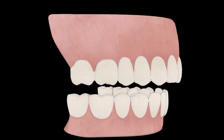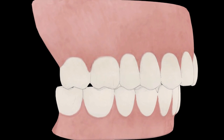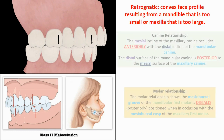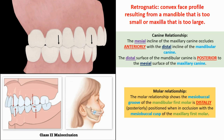The second type of occlusion is Angle Class 2. It is called disto-occlusion or overjet, and is characterized by a convex face profile resulting from a mandible that is too small or a maxilla that is too large. The molar relationship shows the mesiobuccal groove of the mandibular first molar is positioned distally and posteriorly when in occlusion with the mesiobuccal cusp of the maxillary first molar. Usually, the mesiobuccal cusp of the maxillary first molar rests in between the first mandibular molar and second premolar.